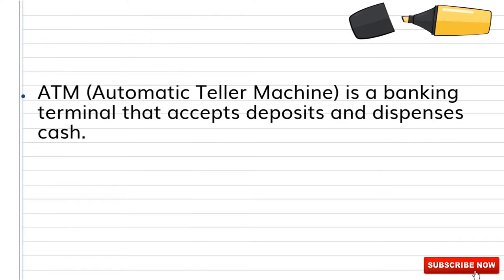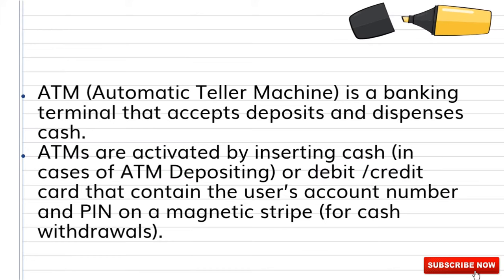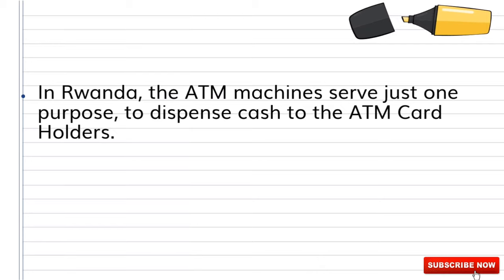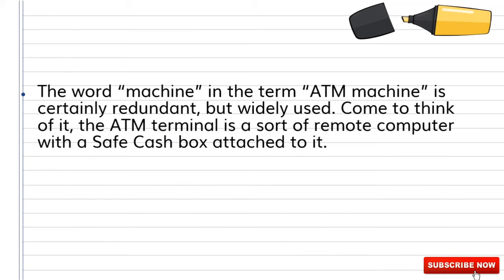An ATM — Automatic Teller Machine — is a banking terminal that accepts deposits and dispenses cash. ATMs are activated by inserting a debit or credit card containing the user's account number and PIN on a magnetic stripe. The ATM requests the bank's computer to verify the balance and authenticity of the card, dispenses the cash, and then transmits a completed transaction notice.